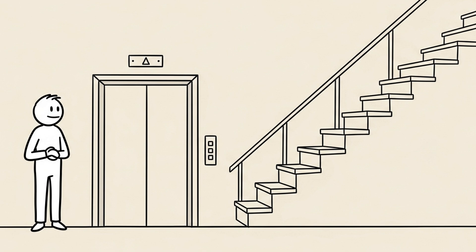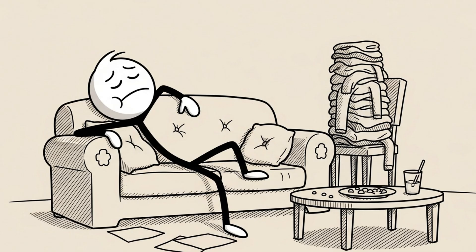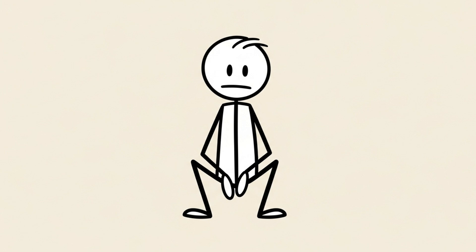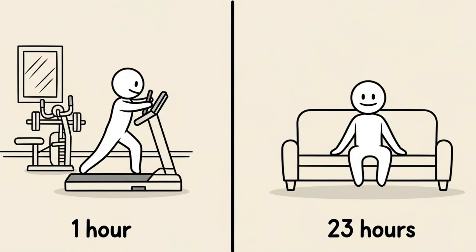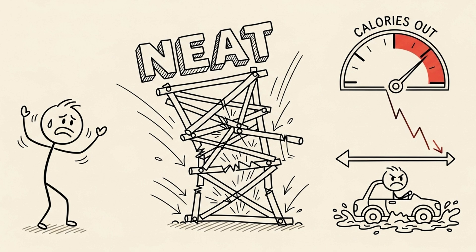You take the elevator instead of the stairs. You lie on the couch instead of doing chores. You fidget less. You talk with your hands less. Even if you force yourself to go to the gym for one hour, your total 24-hour movement has plummeted. Your NEAT collapses, and this can shrink your calories out by hundreds of calories, completely stalling your progress.